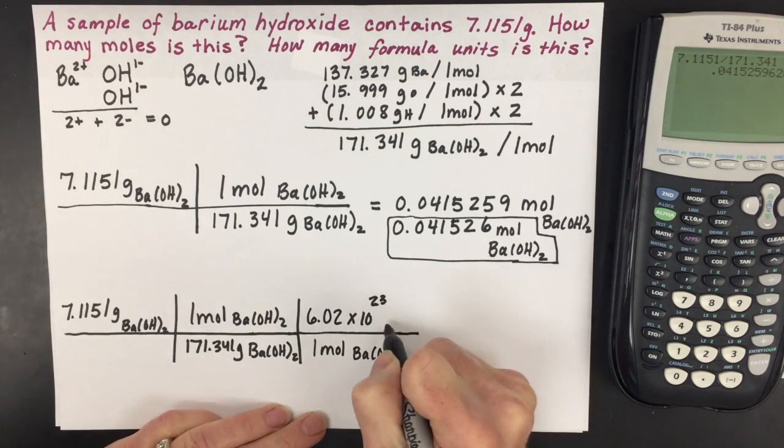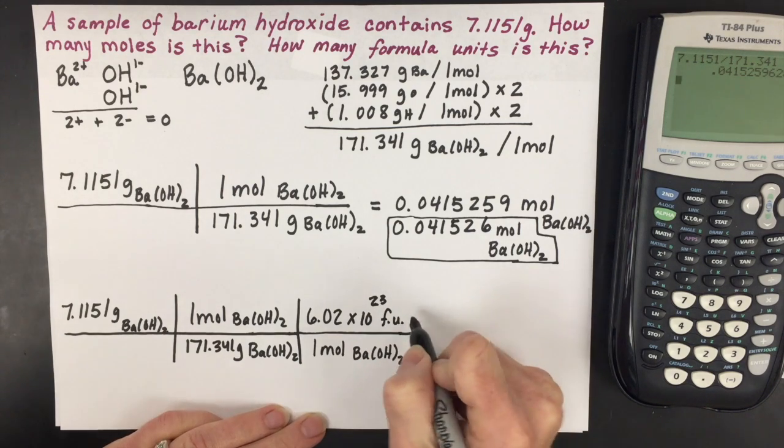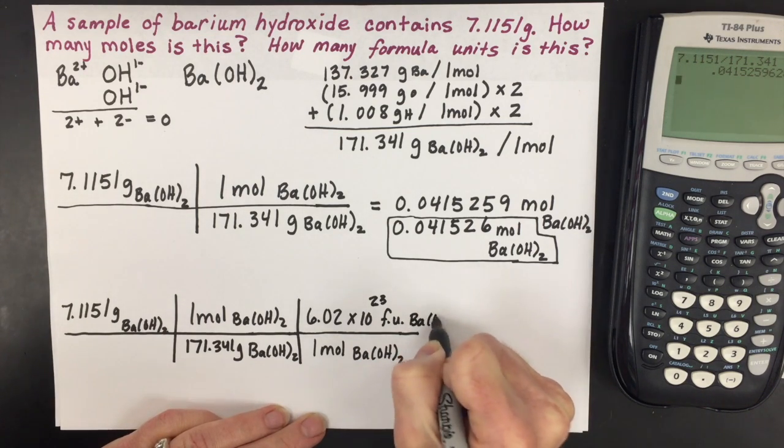Since we call it a formula unit, you can also abbreviate it with the letters FU, and then you can put the label of barium hydroxide.